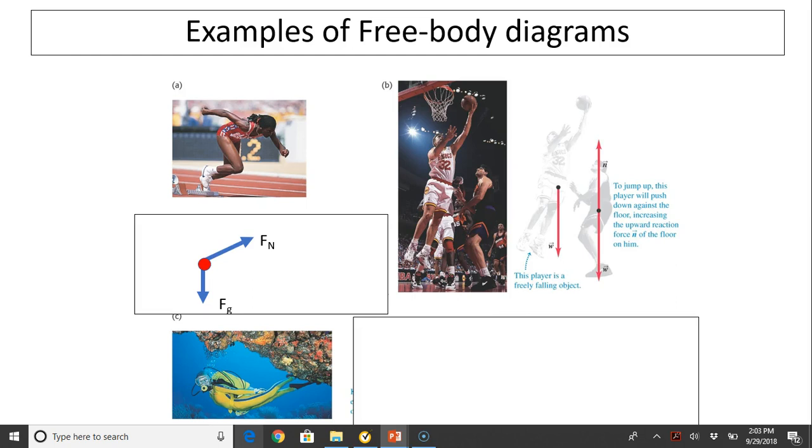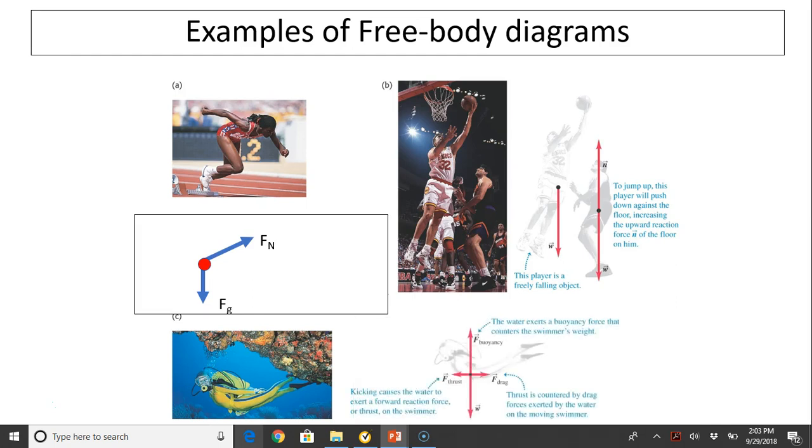Situation three is a diver. In order for the diver to move forward, the diver has to kick the water backwards, so the water will push the diver forward. There are four forces acting on the diver: kicking causes the water to exert a forward reaction force, or thrust, on the swimmer. One is the thrust force, the other is the drag force from the water, gravity on the swimmer, and also the buoyant force. All of them look like they are balancing out. In this case, the swimmer is in equilibrium, probably moving with constant velocity.